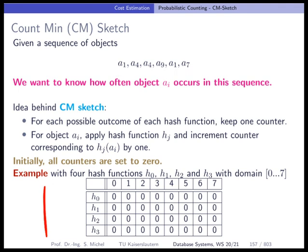So now there's elements coming in the sequence. Basically, that means we are scanning the column of a table, and we see a1. Then we apply hash function 0 on a1, and the hash function will, for example, point us to position 4. And then we go and increment the entry here from 0 to 1.